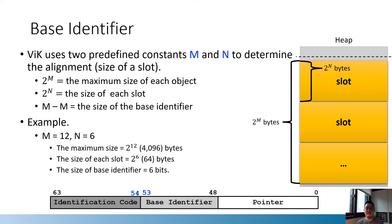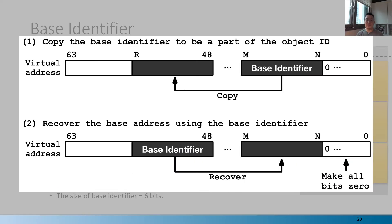These two constants must be configured before VIG's instrumentation. VIG asks users to specify m and n with assistance from knowledge of object sizes, and helps users determine optimal choices by identifying sizes of all objects in the target program. With the base identifier, we can easily calculate the base address of any object by copying specific bits of pointers. Both operations use only bitwise instructions, so they have minimal impact on VIG's performance.